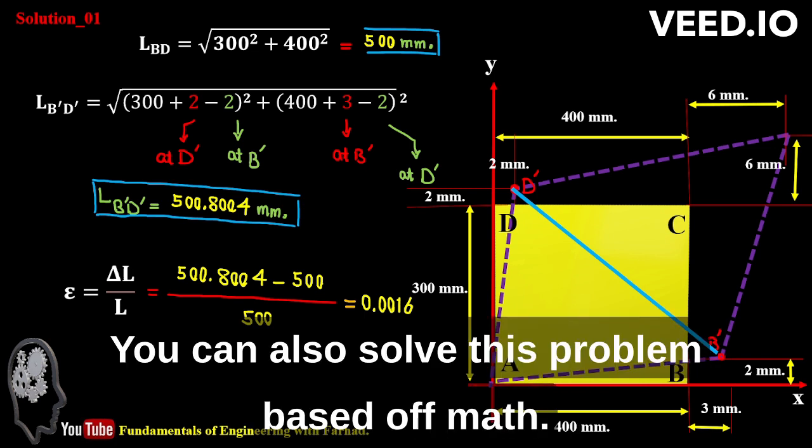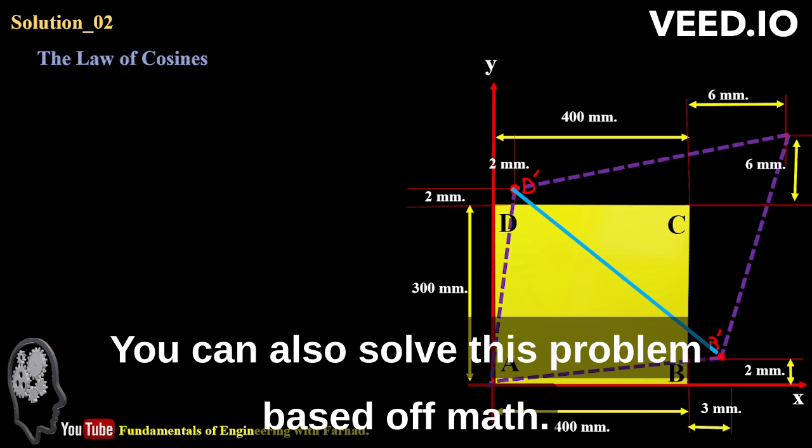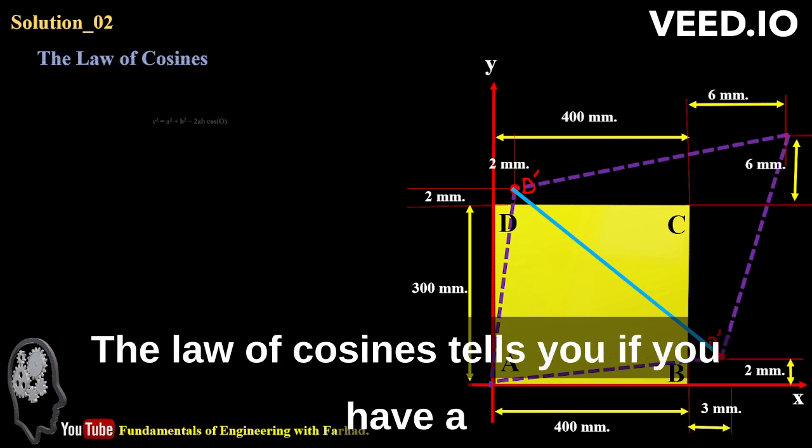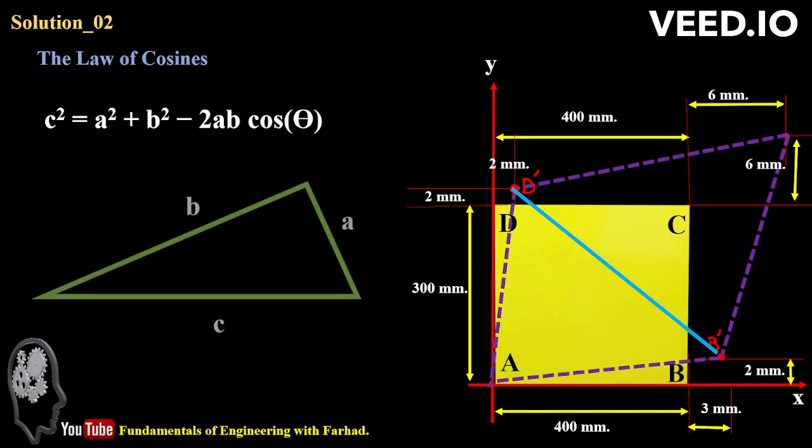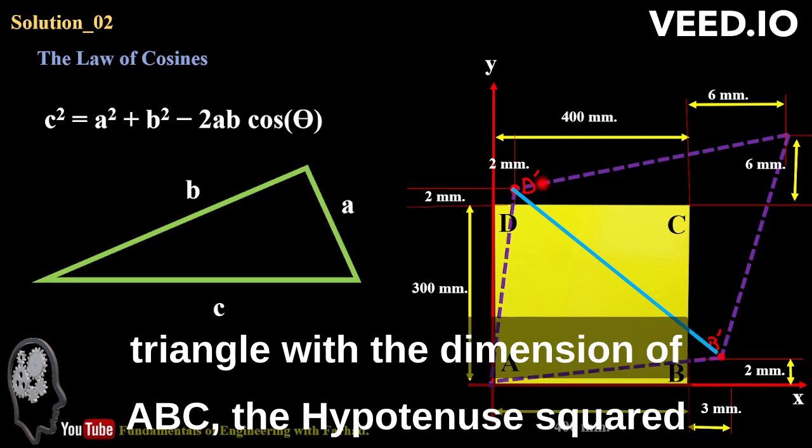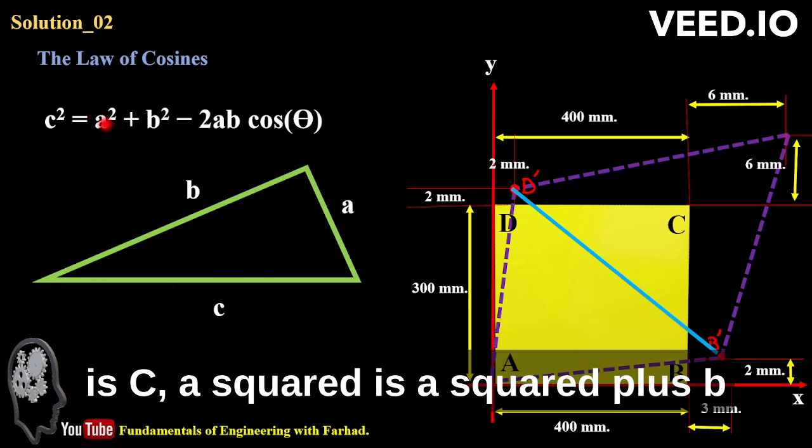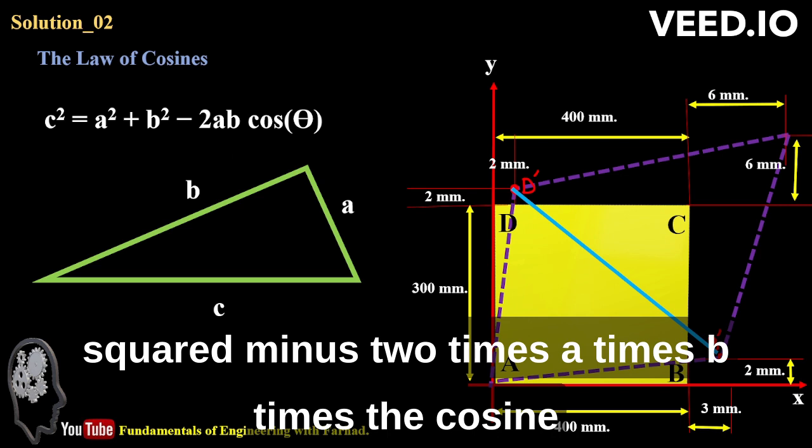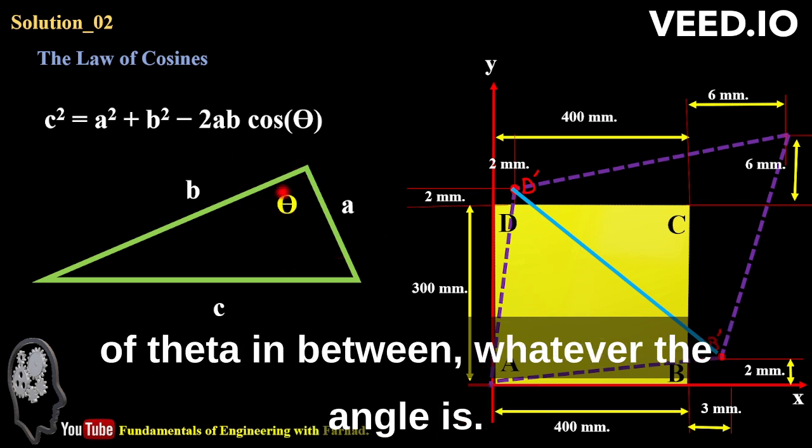You can also solve this problem based on math. The law of cosines tells you if you have a triangle with dimensions a, b, c, the hypotenuse c squared is a squared plus b squared minus 2 times a times b times the cosine of theta in between, whatever the angle is.